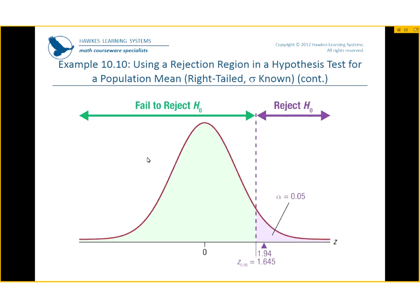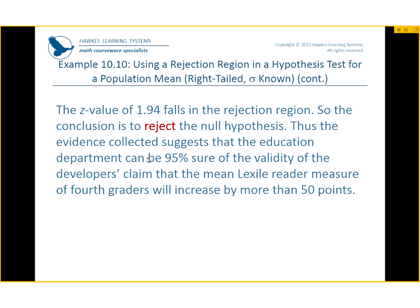So we're saying anything that falls in the region of 1.645 or beyond, we're going to reject the null. Our Z statistic was 1.94. Because it fell into that purple area, we can reject our null. The conclusion is to reject the null. Thus, the evidence collected suggests that the education department can be 95% sure of the validity of the developer's claim that the mean lexile reading measurement of fourth graders will be increased by more than 50 points. Our research hypothesis is accepted and we rejected our null.